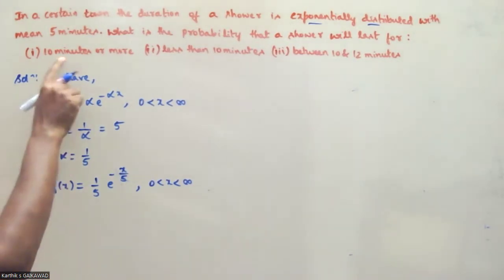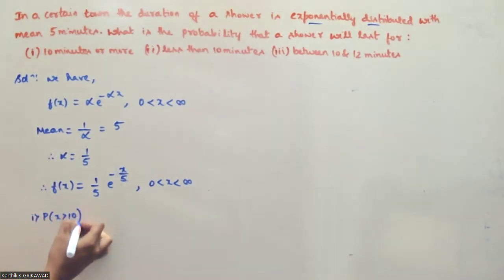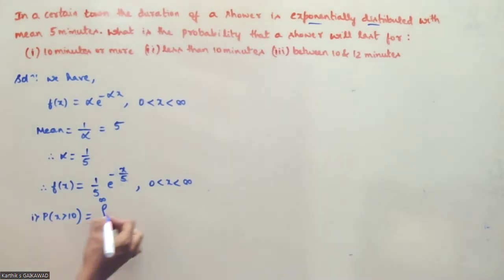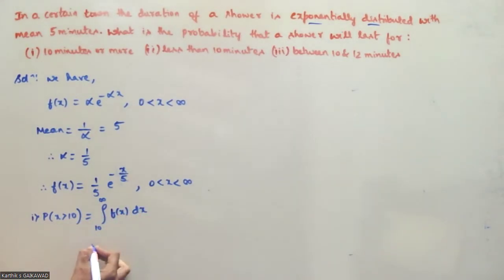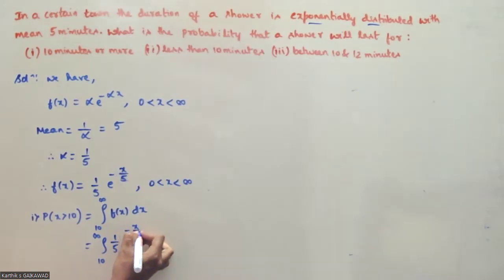For the first question, 10 minutes or more: P(X > 10) equals the integral from 10 to infinity of f(x) dx, which equals the integral from 10 to infinity of (1/5) * e^(-x/5) dx.